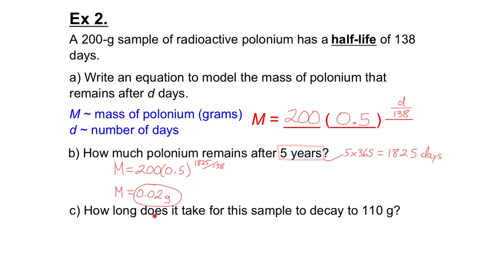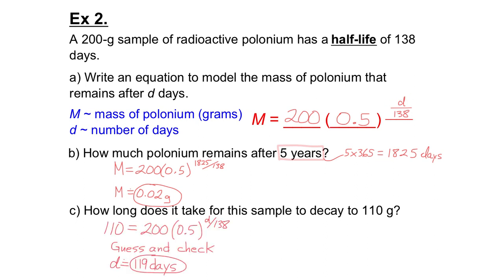Part C: how long does it take for this sample to decay to 110 grams? We know the mass is 110, and we're figuring out what D is. Using guess and check, I end up with about 119 days. So it takes about 119 days for my 200-gram sample to decay to 110 grams.